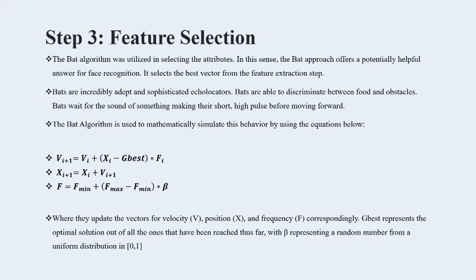Step 3: feature selection. The BAT algorithm was used in selecting the attributes. The BAT approach offers a helpful solution for face recognition. By this equation, the BAT algorithm can be represented mathematically, where the velocity is updated, and the position and frequency are updated, where G-best represents the optimal solution and B represents a random number from a uniform distribution in the range 0 to 1.